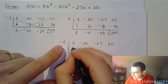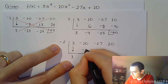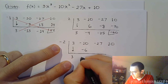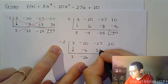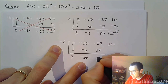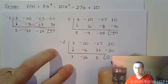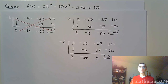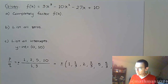Synthetic division with negative 2: bring down 3, multiply gives -6, add gives -16, multiply gives 32, add gives 5, multiply gives -10 — remainder of zero! Negative 2 works.